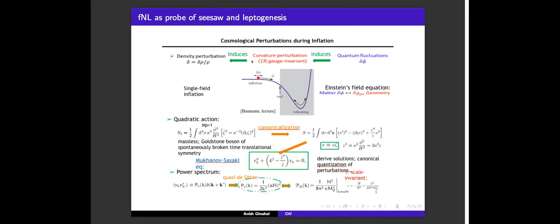You have a scalar field rolling down its potential. At some point, the perturbations from the scalar field exit the horizon and then re-enter. If these perturbations are large enough to source a power spectrum of order 10^{-2} to 10^{-1}, you have hope of making primordial black holes into dark matter. To calculate this, you solve the full Mukhanov-Sasaki scalar field perturbation equations. Roughly, the power spectrum is inversely proportional to epsilon — the slow-roll parameter — which contains the velocity of the field. If the field velocity is slow, epsilon is small, the power spectrum is large, and you can have primordial black holes.